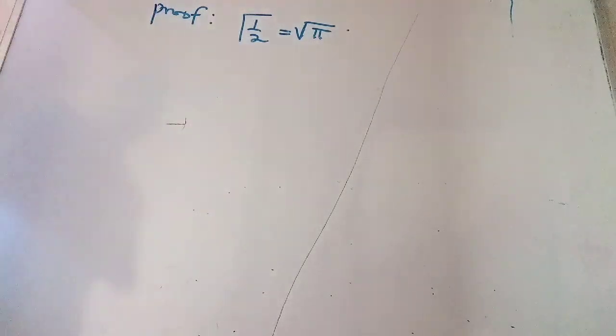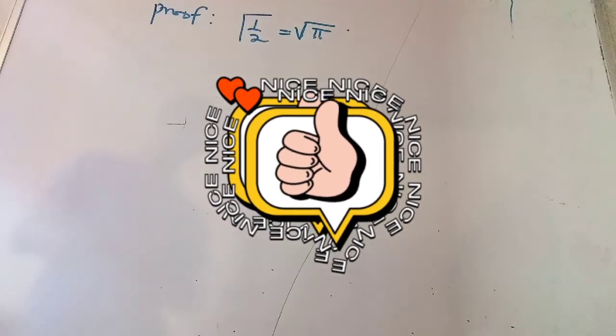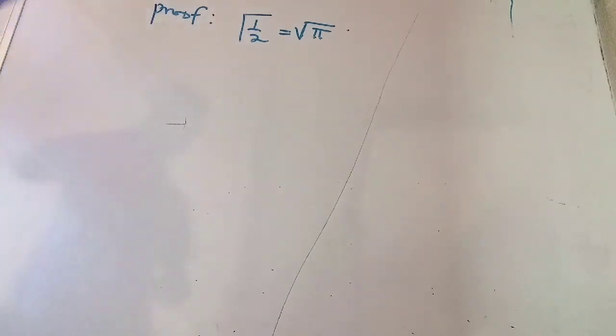Good day everyone. You are welcome to Science Explained. Today, we want to have a look at how we can prove that gamma of 1/2 equals square root of pi.